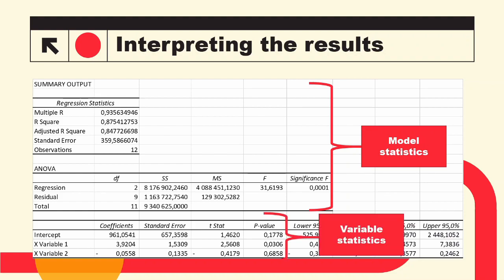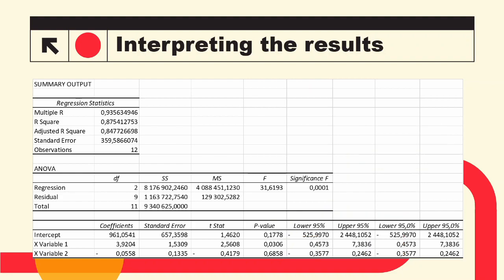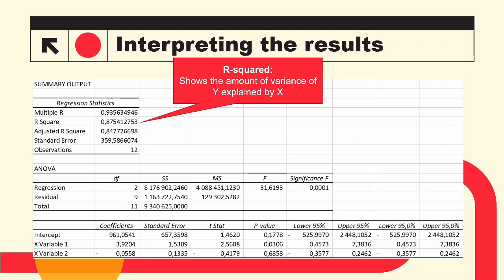Let us unpack the important statistics in more detail. First, we have R-squared, which shows the amount of variance of Y explained by our x variables — in this case, how much do machine hours and units produced explain our maintenance costs? Based on the R-squared number, we see that machine hours and units produced explain 87.54% of the variation in maintenance costs. However, R-squared doesn't account for the number of variables or observations used in the regression model.